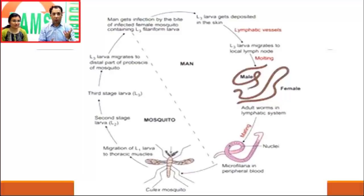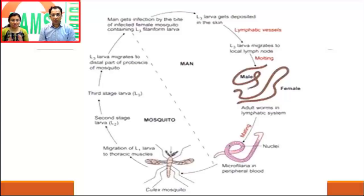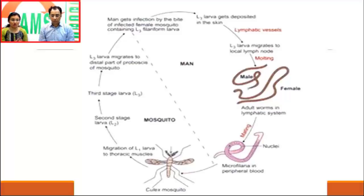We can broadly classify parasites into protozoa and helminths. Under helminths we have nematodes, which are basically roundworms, and we can classify them as intestinal nematodes and tissue nematodes based on where the adult worm resides. The filarial dance sign that was discussed is typical of Wuchereria bancrofti, which is a filarial worm — a tissue nematode.